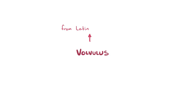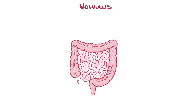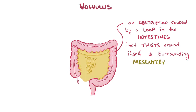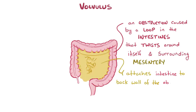The term volvulus actually comes from the Latin word 'volvare,' which means to roll. So a volvulus is an obstruction caused by a loop of the intestine that rolls or twists around itself and its surrounding mesentery, which is the tissue that attaches the intestine to the back wall of the abdomen.